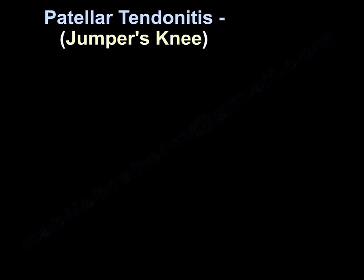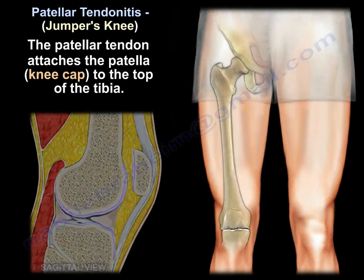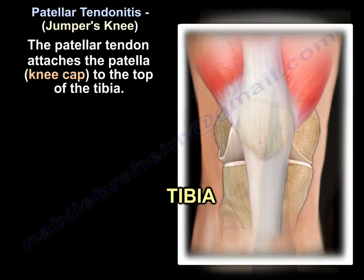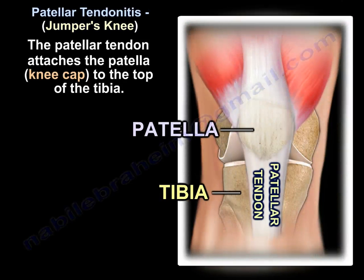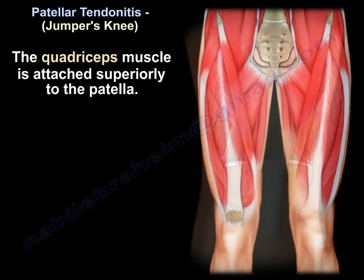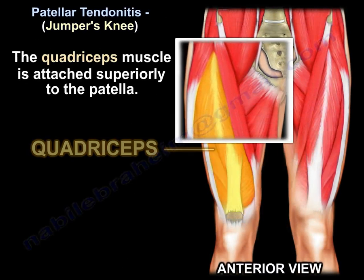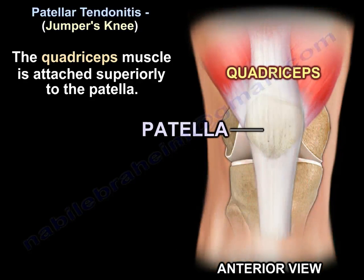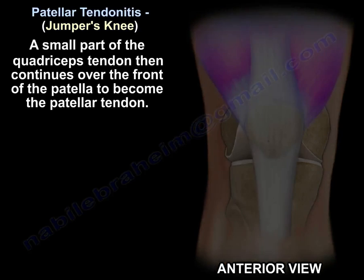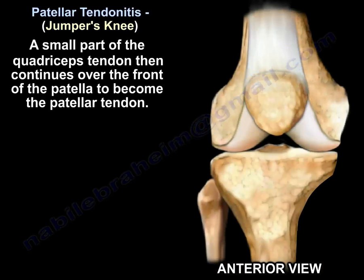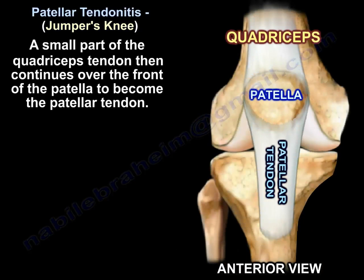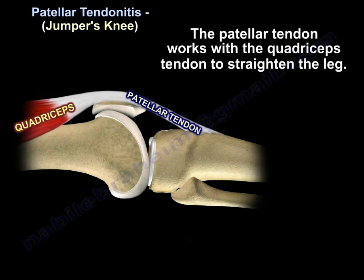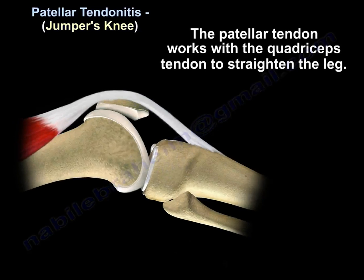The patellar tendon attaches the patella, which is the kneecap, to the top of the tibia. The quadriceps muscle is attached superiorly to the patella. A small part of the quadriceps tendon continues over the front of the patella to become the patellar tendon. The patellar tendon works with the quadriceps tendon to straighten the leg.